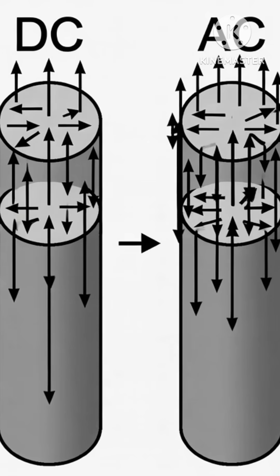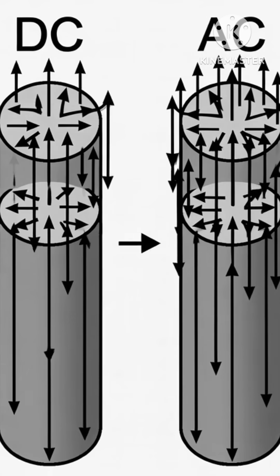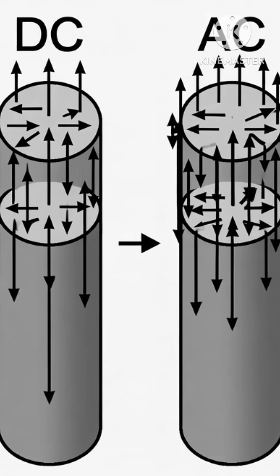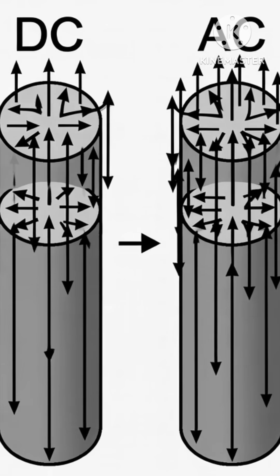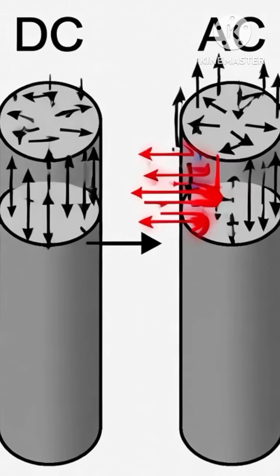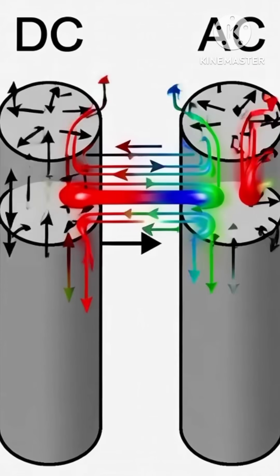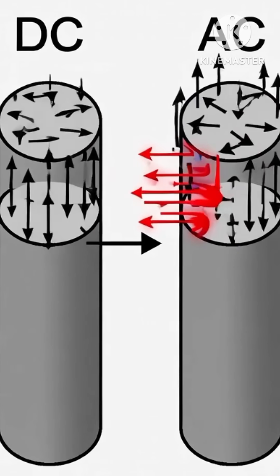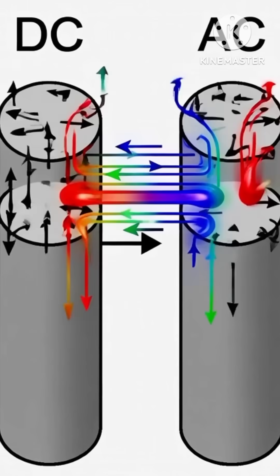AC current behaves differently in wires because of the skin effect. At high frequencies, AC tends to flow near the surface of the conductor. This happens because the changing magnetic fields inside the wire oppose the flow in the center, pushing the current outward.